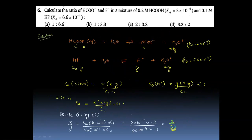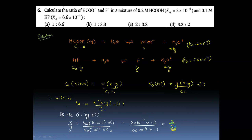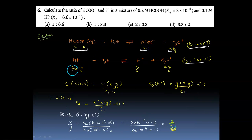Next we see another important question — question number six. The question asks for the ratio of HCOO⁻ to F⁻ in a mixture of 0.2 M formic acid and 0.1 M HF. From the Ka values of formic acid and hydrofluoric acid, both are weak acids, so they generate relatively few ions. At equilibrium, if C₁−X is the formic acid concentration, X is its dissociation; for HF, let dissociation be Y, so [H⁺] = X + Y from both reactions.